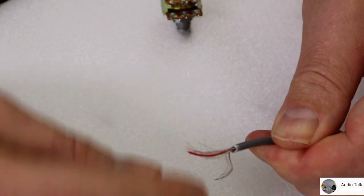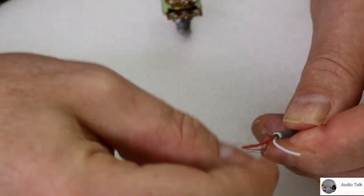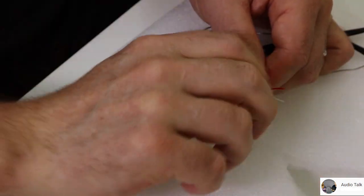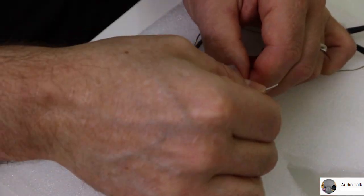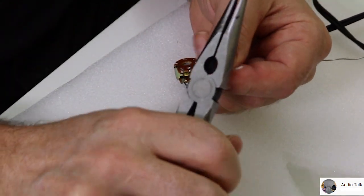You need to separate all the little strands of your ground wire and get those all twisted together. It's important that you don't have any strands left that could potentially touch the plus signal, because that will be a short.